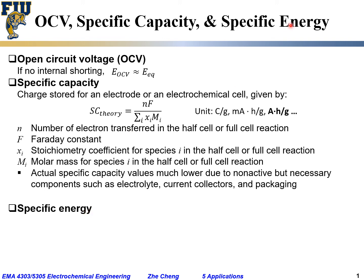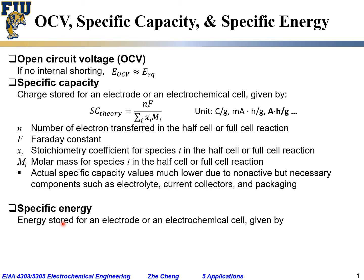And then a related concept would be called specific energy, SE. That is energy stored for an electrode, especially chemical energy stored for an electrode or an electrochemical cell. And that is given by specific capacity times open circuit voltage.